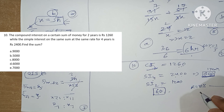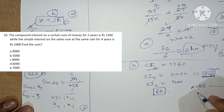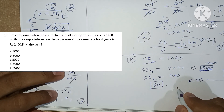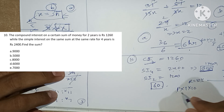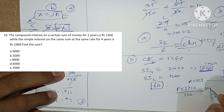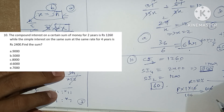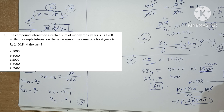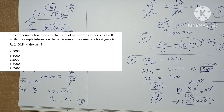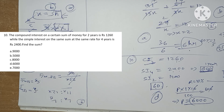Since 60 is 10% of 600, the rate is 10%. Using SI formula: P × 10% × 1 year = 600, so principal P = 6000. Option D is our answer. That's all for today — if you are new to my channel please do like, share, and subscribe and click the bell icon to get instant notifications. Thanks for watching.